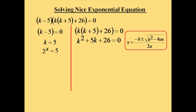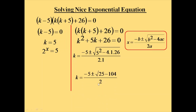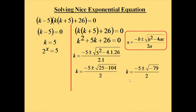Here a = 1, b = 5, c = 26. Applying the formula k = (-b ± √(b² - 4ac)) / 2a, we get k = (-5 ± √(25 - 104)) / 2, which gives k = (-5 ± √(-79)) / 2. Since we have a negative value under the square root, there is no real solution — the solution is imaginary. So we ignore this part.